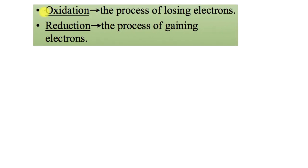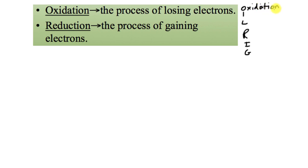In a redox reaction, two things are happening. Oxidation is the process of losing electrons, and reduction is the process of gaining electrons. A mnemonic to help you remember this is OIL RIG: oxidation is loss, reduction is gain.